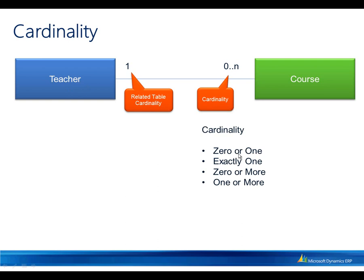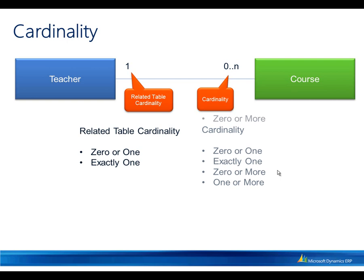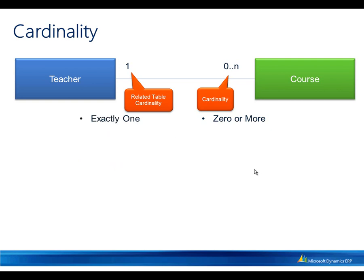There are several values for cardinality. These express 0 or 1, exactly 1, 0 or more, or 1 or more. On the related table cardinality side, the options are 0 or 1 and exactly 1. In our case, a teacher can teach 0 or more courses. Therefore, the value we will choose is 0 or more. On the teacher side, a course must have exactly 1 teacher. A course cannot exist with no teacher assigned. Therefore, we are going to set exactly 1. Based on the model that you have, you can pick the right values for the cardinality and the related table cardinality properties.